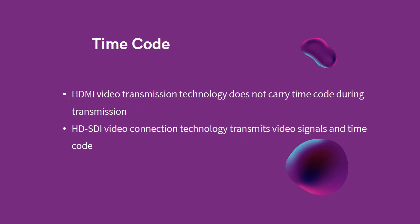Time Code: Time code is a numeric sequence involved in digital signal transmission. HDMI video transmission technology does not carry time code during transmission, therefore it is only suitable for consumer market video transmission. However, HD-SDI video connection technology transmits video signals with time code via a single transmission cable. Therefore, in commercial video transmission where factors like transmission speed, quality, durability, and flexibility are important, HD-SDI video connection technology makes a great fit.